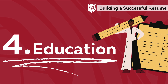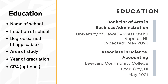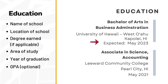Number four, education. List your most recent education on top and then list the rest in reverse chronological order. Include the name of the school, location of the school, degree earned, area of study, and year of graduation. If you are still currently studying in school, write the expected graduation date instead.